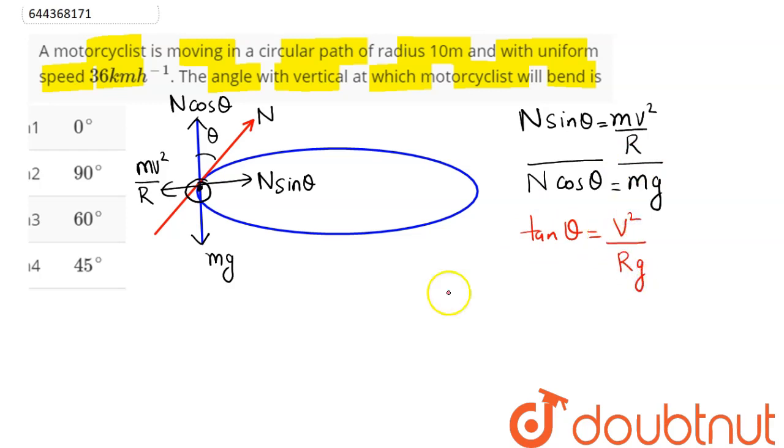Hence tan θ = v²/(rg). Now 36 km/h, this speed can be converted to m/s by multiplying by 5/18.